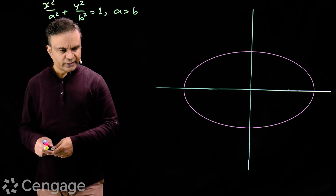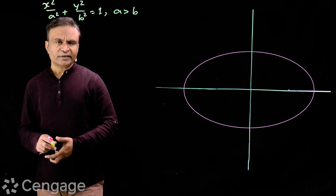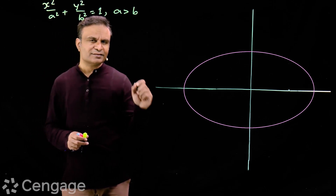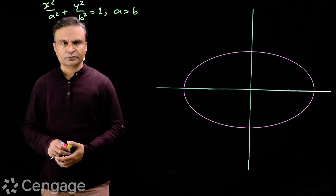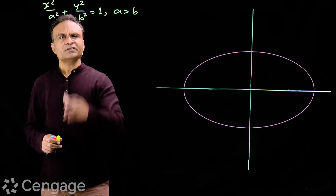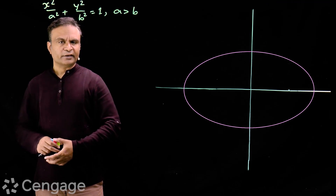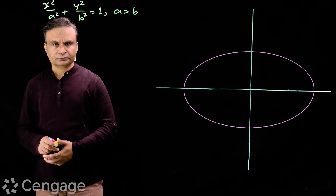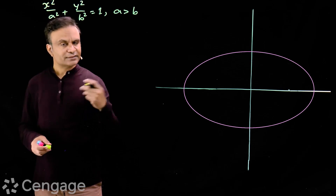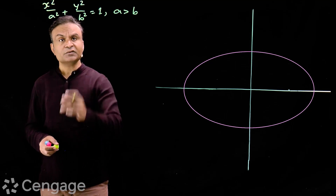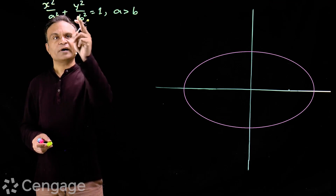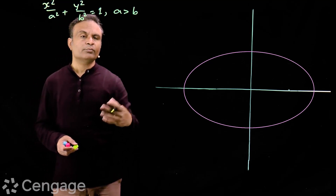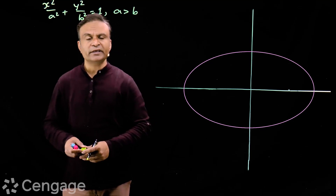I always say that in mathematics one should analyze the structure of formulas and equations. Like in this equation, what can we analyze? Primarily, here a is the semi-major axis, b is the semi-minor axis, and x and y are coordinates of a variable point on the ellipse.